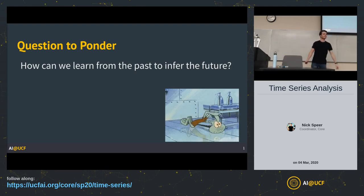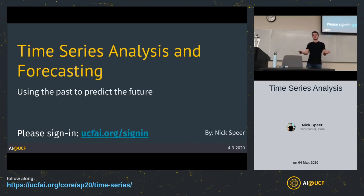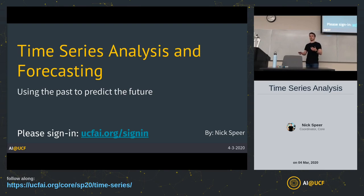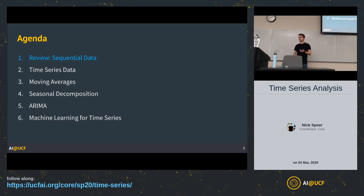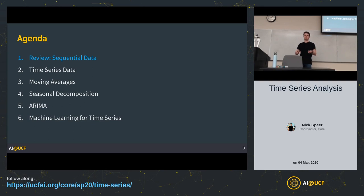We've got our friend Squidward here, so that helps. This lecture is going to be on time series prediction — how we can use the past to try to infer on the future, how we can try to learn more from time series data, break it down into nice working pieces, and really extract a lot of meaning out of pretty random data that can be quite unpredictable. We're going over sequential data, then how sequential data is similar to time series data. Then we'll break our time series data down by applying moving averages, seasonal decomposition, and autoregressive models. Finally, we'll be going into some machine learning applications for time series data.